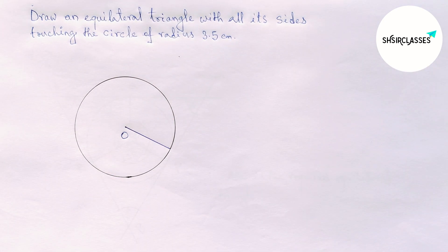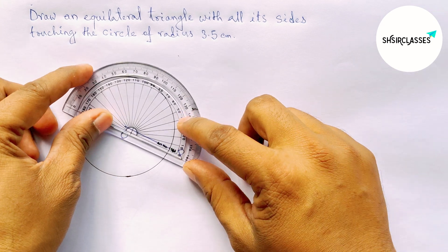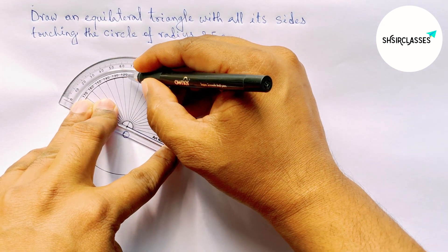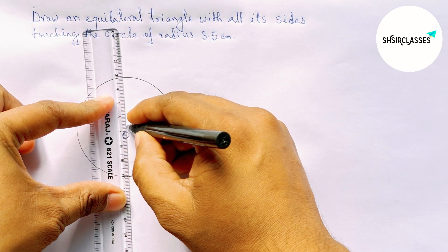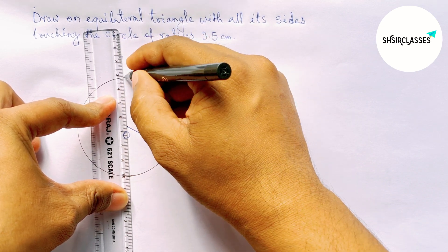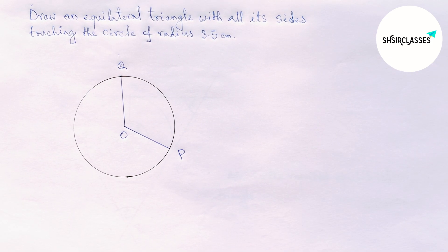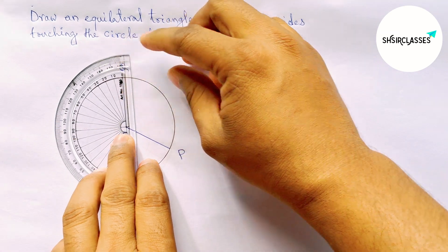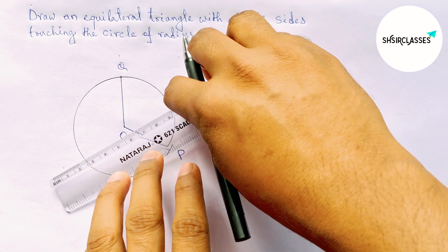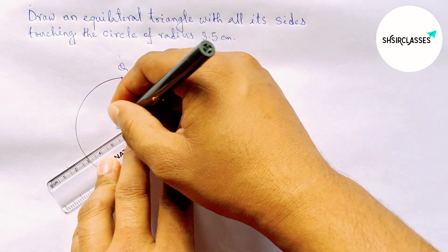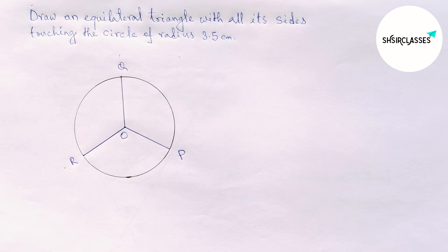Take a point P on the circumference. Next, draw a radius OP and then draw a 120-degree angle on the radius OP with the help of a protractor. Mark 120 degrees, join it — this gives another radius. Label that point Q. Again draw a 120-degree angle on radius OQ with the protractor, mark 120 degrees, join it — this gives another radius. Label that point R.